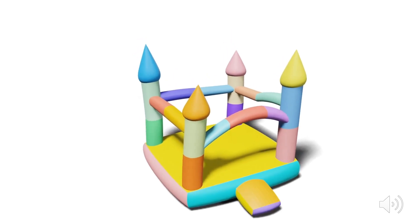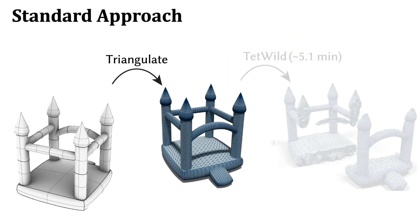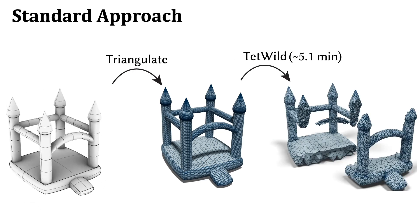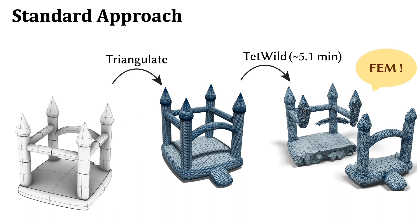The standard physics-based animation pipeline requires that we first convert our curved surface model to a piecewise linear triangle mesh, then tetrahedralize it, and finally simulate it using something like the finite element method.